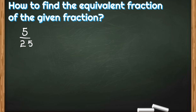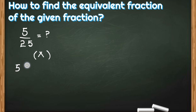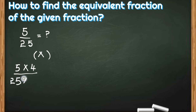Now let us take an example: 5 by 25. How do we find its equivalent fraction? First we will use the multiplication method. In the multiplication method, we have to multiply both the numerator and the denominator of the given fraction by the same number.